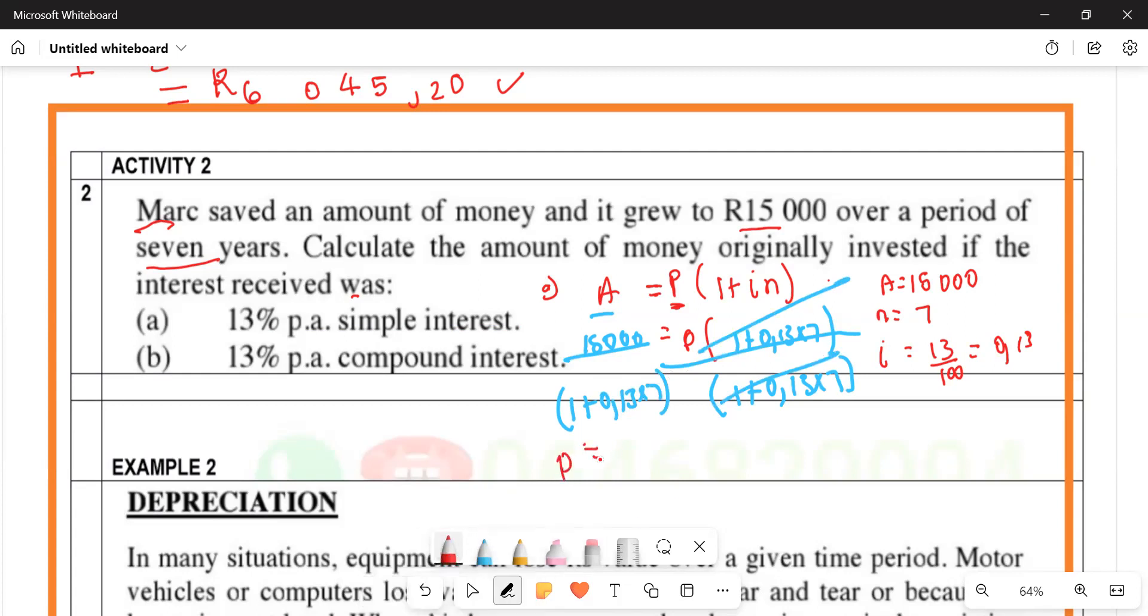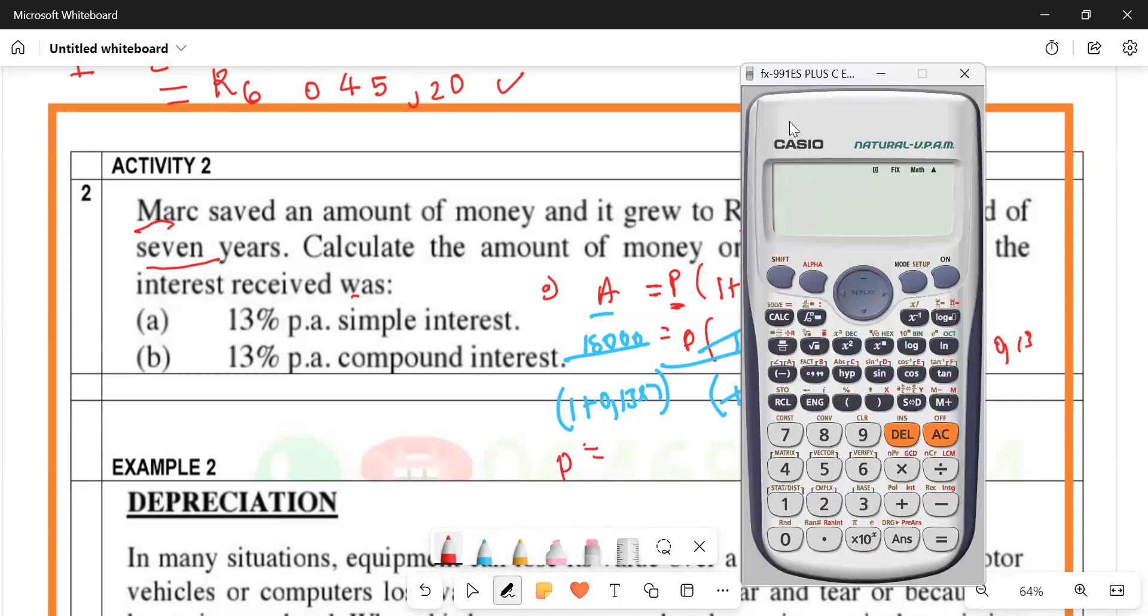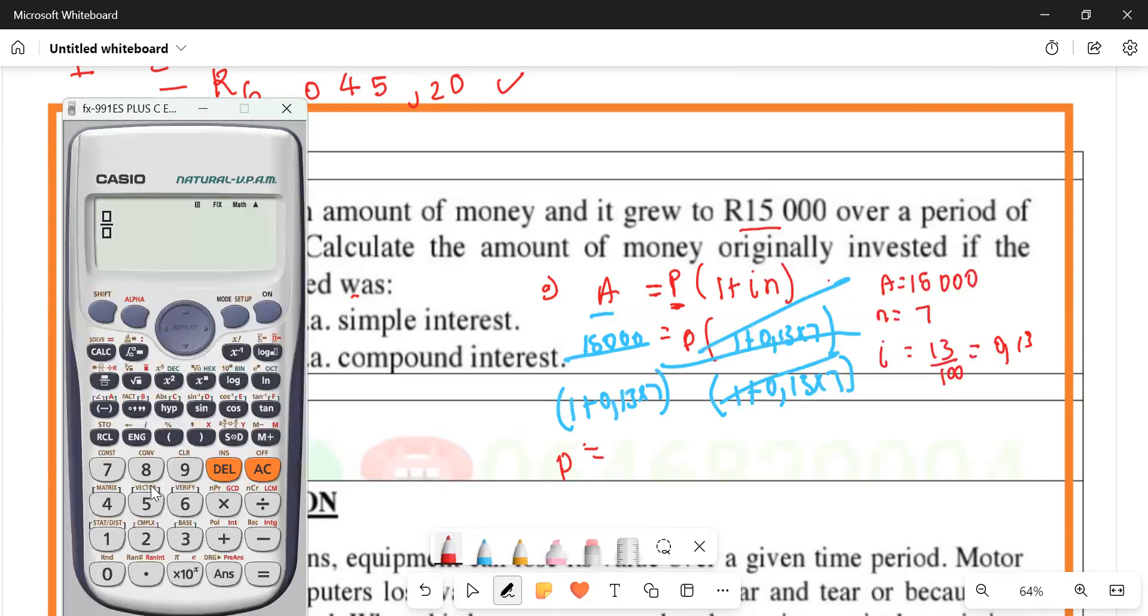Then you get what? P is going to equal... I'm interested in typing it in the calculator. You put it inside the fraction: 15,000 all over one plus 0.13 multiplied by seven, close bracket.